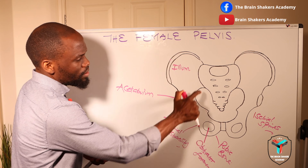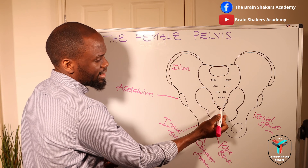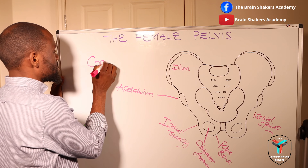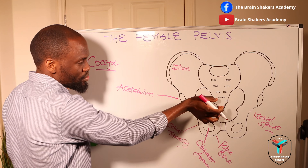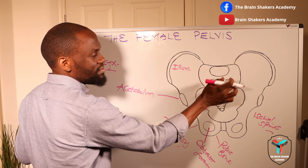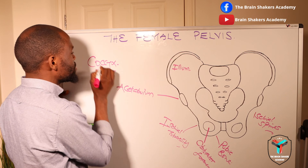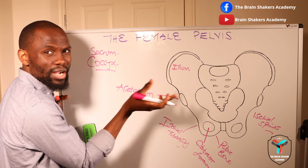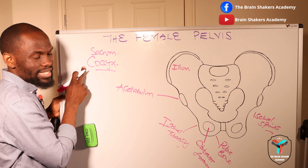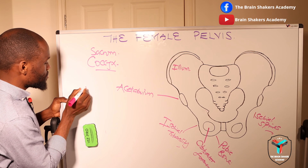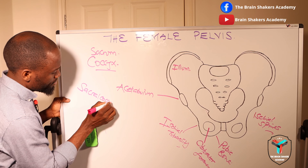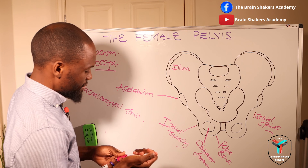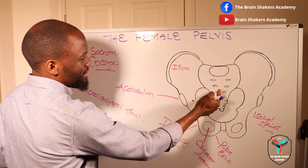When you look at this particular diagram, you will find the bottom end, which is what we refer to as the coccyx. You have fused bones there that represent the coccyx. Then you have the region on the upper part, which is going to be the sacrum. Where the sacrum and the coccyx come together, or where they fuse, you call that the sacrococcygeal joint — so where they come into contact, that will be referred to as the sacrococcygeal joint.